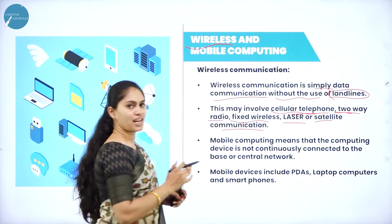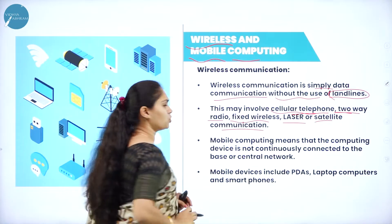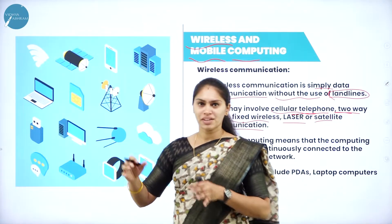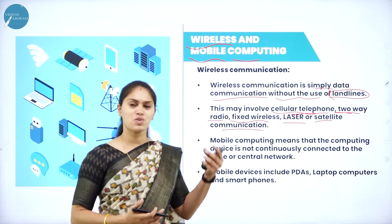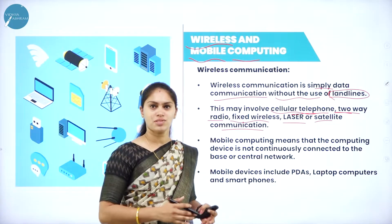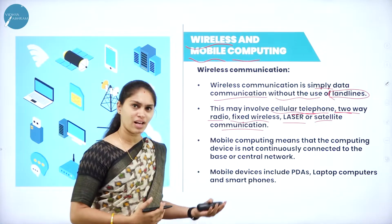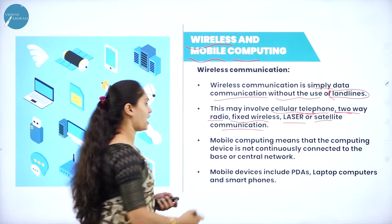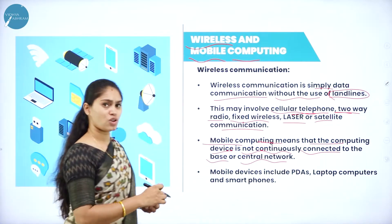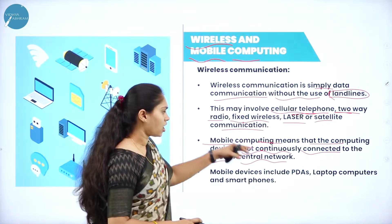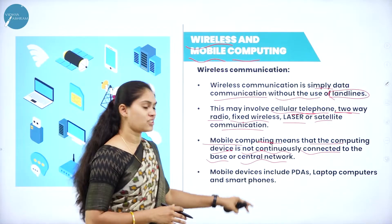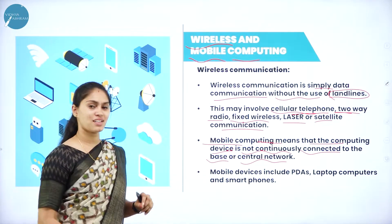Now we will look at mobile computing. Computing means we can perform some tasks. If I am performing tasks without being fixed anywhere, that is mobile computing. Mobile means it can move around — it is not static or fixed. It can travel from one place to another to perform operations. Mobile computing means the computing device is not continuously connected to a base or central network; there is no restriction — it can move around.